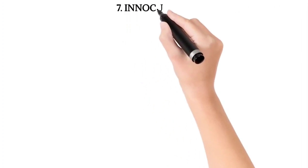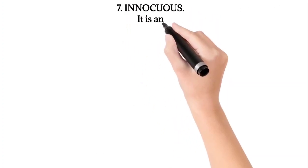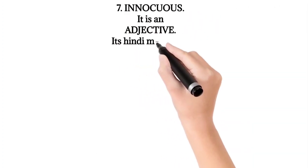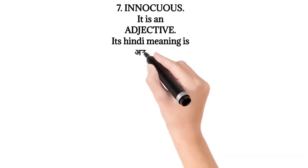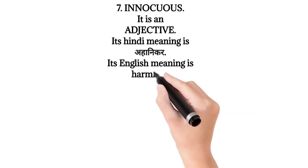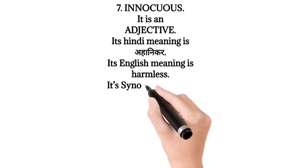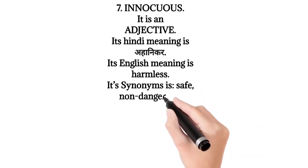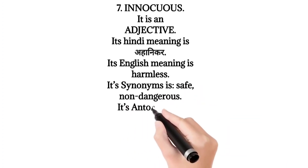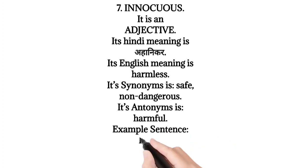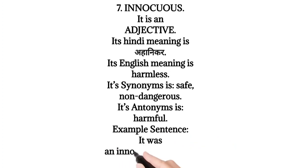7. Innocuous. It is an adjective. Its Hindi meaning is Ahanikar. Its English meaning is Harmless. Its synonyms are Safe, Non-Dangerous. Its antonym is Harmful. Example sentence: It was an innocuous question.